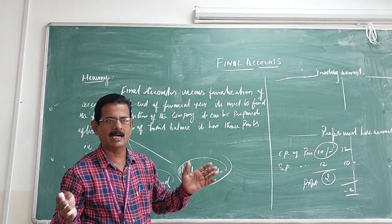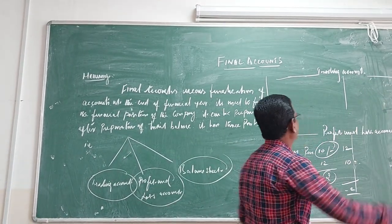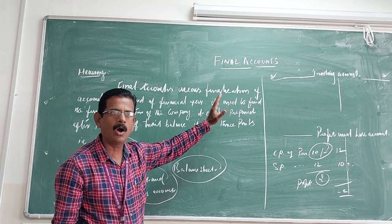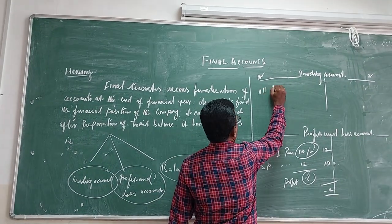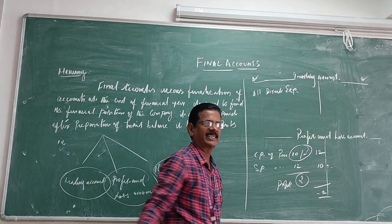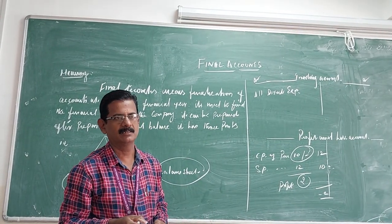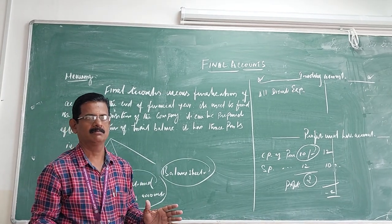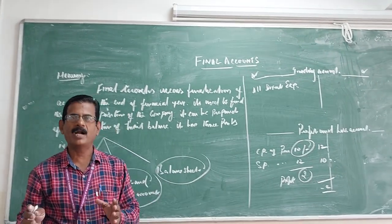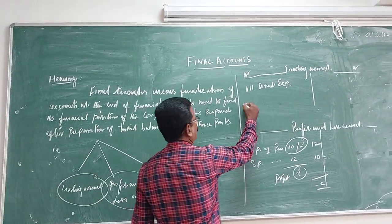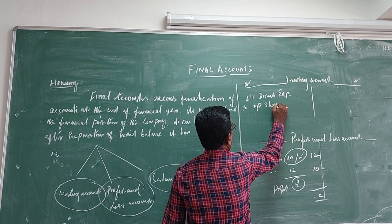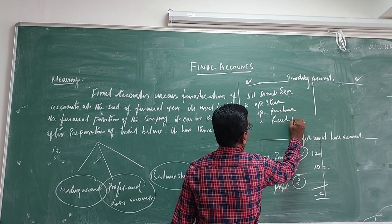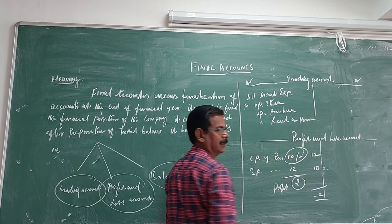Trading has two sides, one is the debit side and one is the credit side. The debit side should record all direct expenses. Those expenses are directly supporting the manufacturing process, for example opening stock, purchase, wages, fuel and power, carriage inwards.